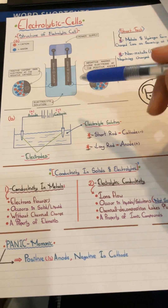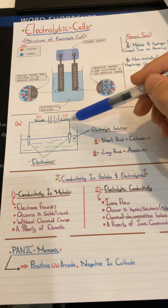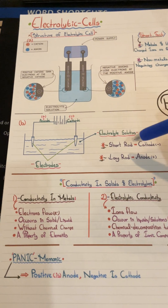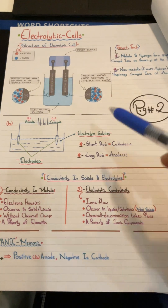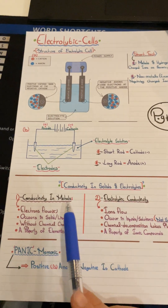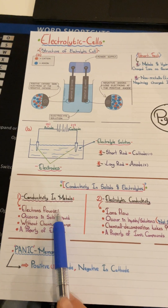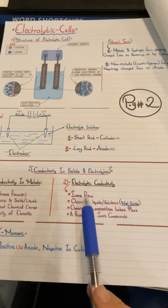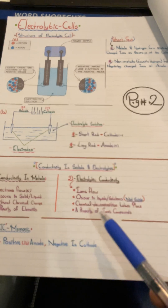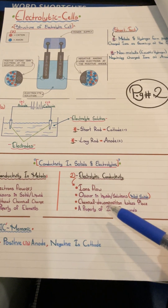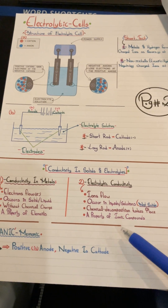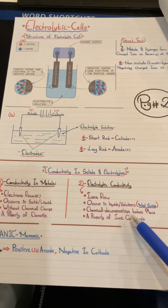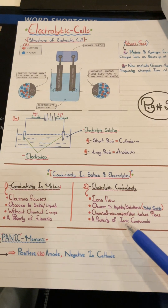In a diagram of the electrolytic cell, you have the cathode (negative), the anode (positive), and the electrolytic solution. Remember: the short rod is always the cathode and the long rod is always the anode. Conductivity in metals is due to electron flow, occurs in solids and liquids without chemical change. Electrolytic conductivity, on the other hand, is due to ion flow, occurs in liquid solutions but not solids, and chemical decomposition takes place — this is how we identify what is reduced and oxidized.